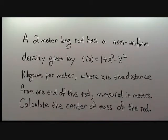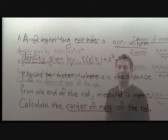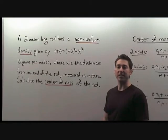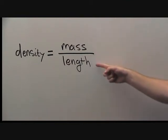Let's underline two key phrases that will help us understand this problem. The first key phrase is 'non-uniform density.' The second key phrase is 'center of mass.' Because we are trying to find the center of mass of a long rod, we can assume the problem is one-dimensional. What that means is the density is the mass per length.